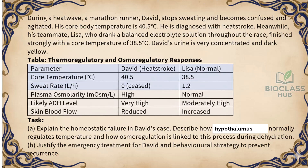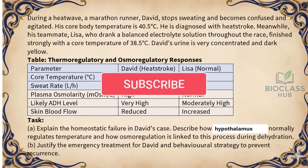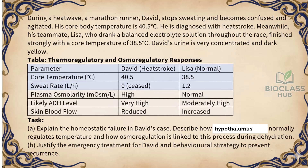Item 3. During a heatwave, a marathon runner, David, stops sweating and becomes confused and agitated. His core body temperature is 40.5 degrees Celsius — he is diagnosed with heat stroke. Meanwhile, his teammate Lisa, who drank a balanced electrolyte solution throughout the race, finished strongly with a core temperature of 38.5 degrees Celsius. David's urine is very concentrated and dark yellow.